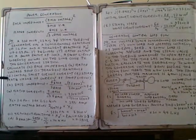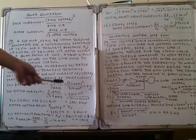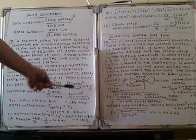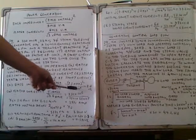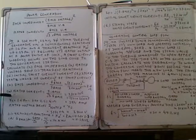First, we calculate the base impedance. The formula is base voltage squared divided by base MVA. The base voltage is 25 kV, so we substitute 25,000. The base MVA is 250, so 250 × 10⁶. Dividing 25,000 squared by 250 × 10⁶ gives 2.5 ohms.